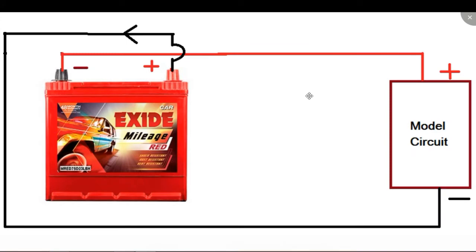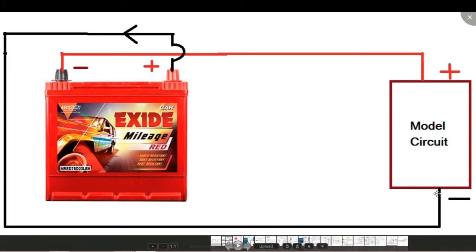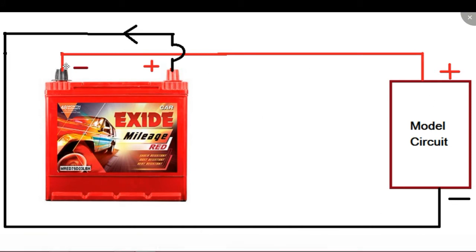But sometimes we may accidentally connect the positive terminal of the battery to the negative terminal of the circuit and the negative terminal of the battery to the positive terminal of our circuit. This may sometimes completely damage our circuit. In this video we will see how to protect our circuit from this type of mistake.